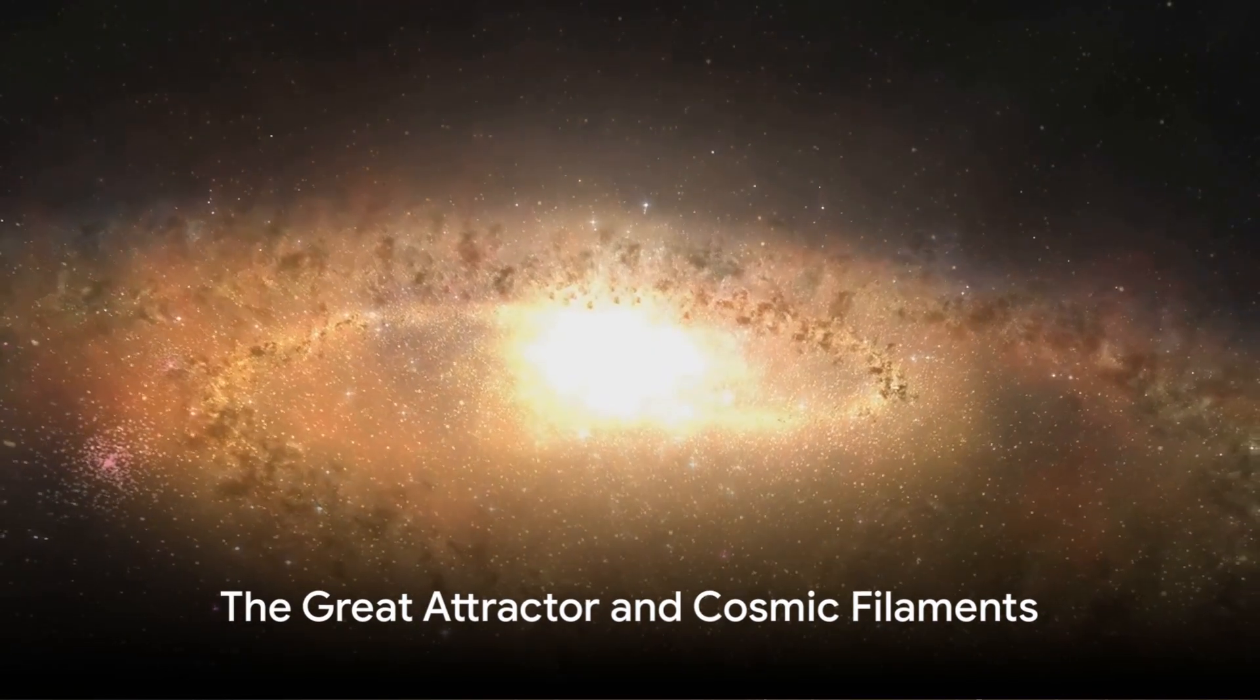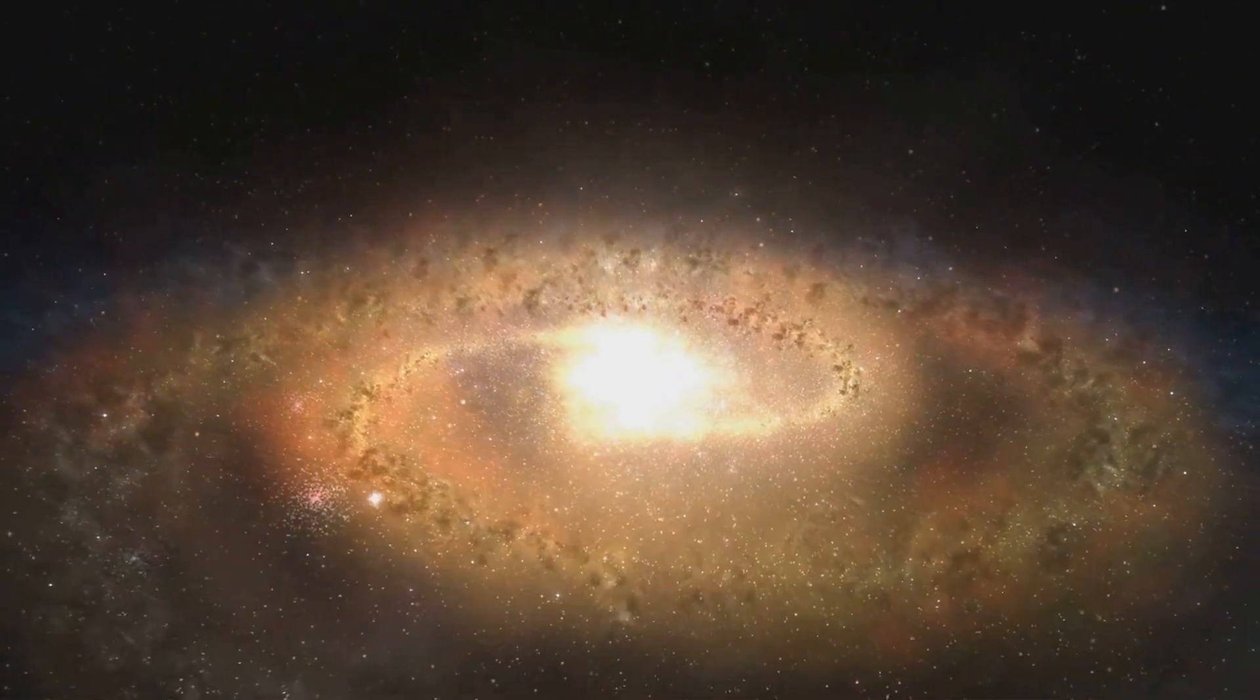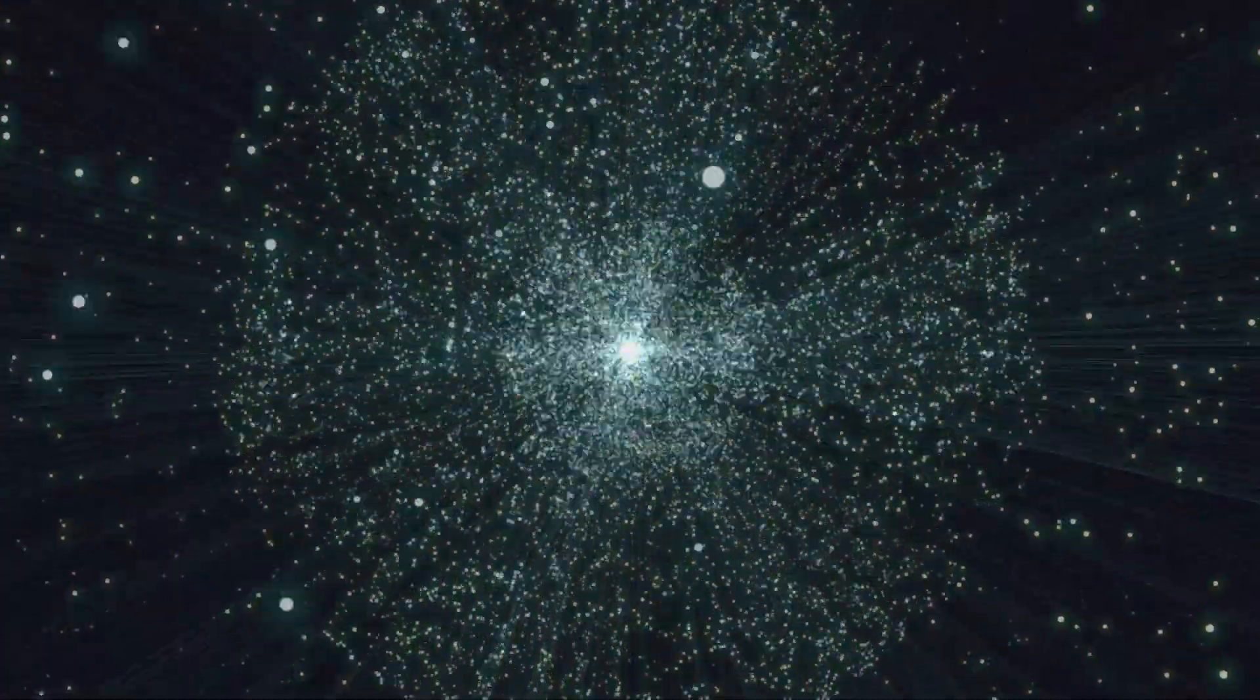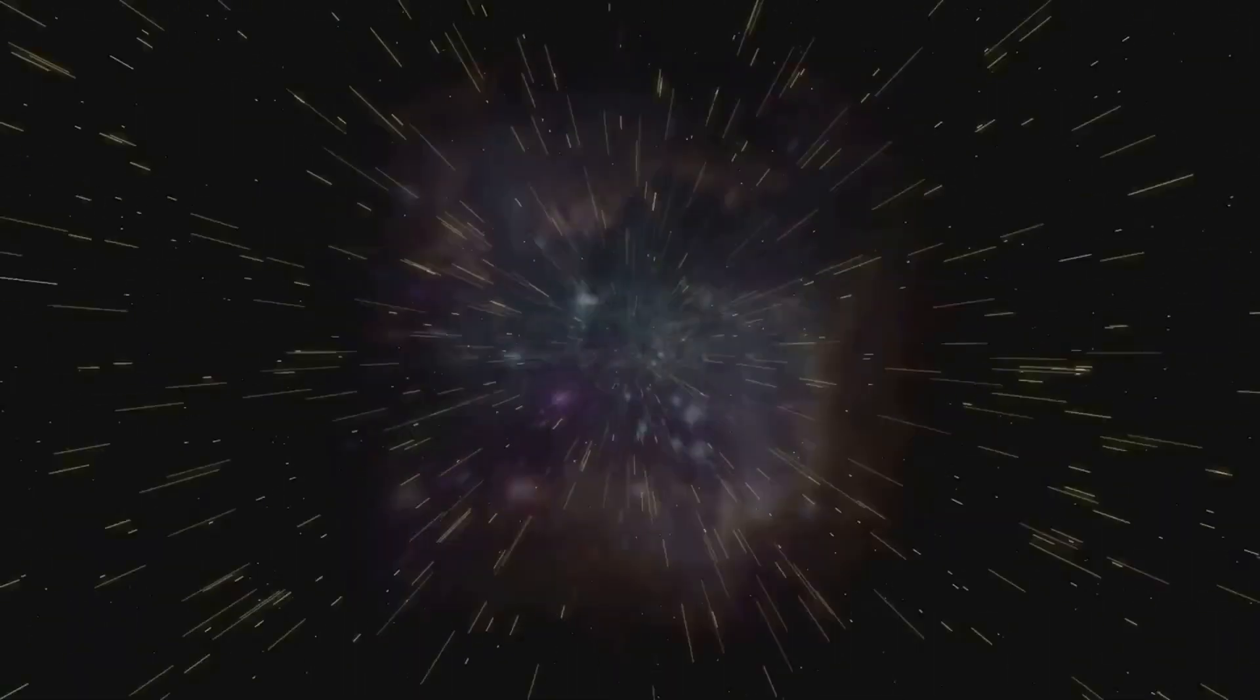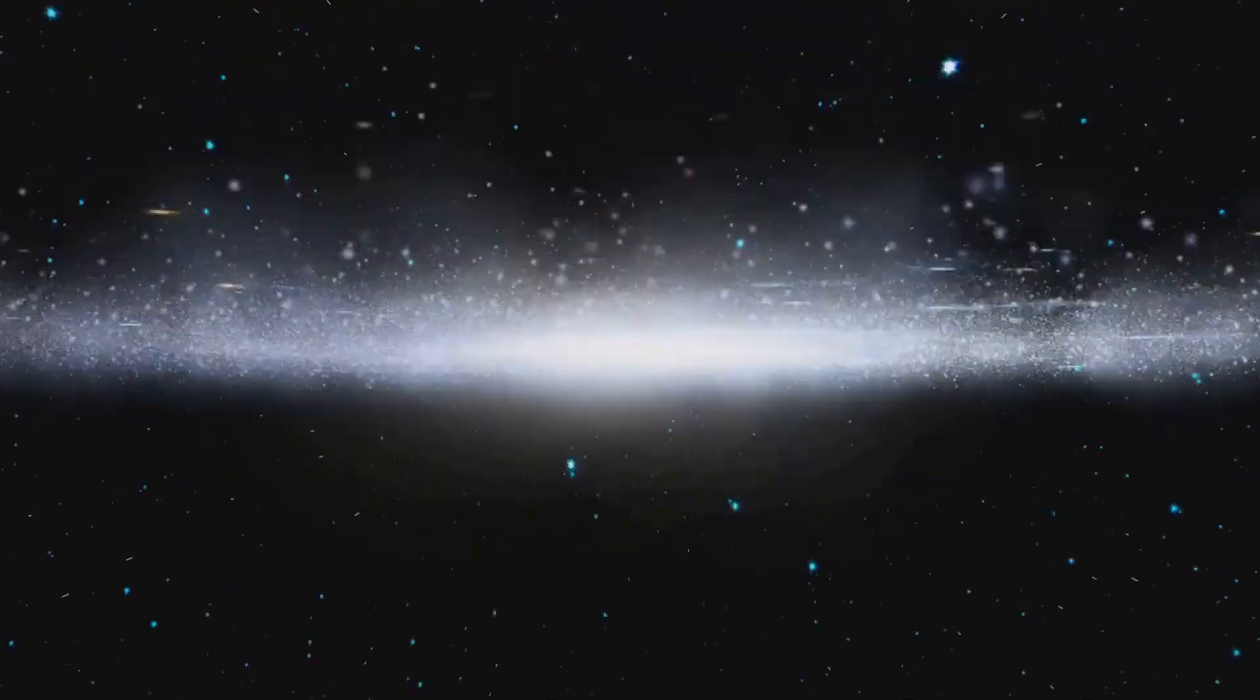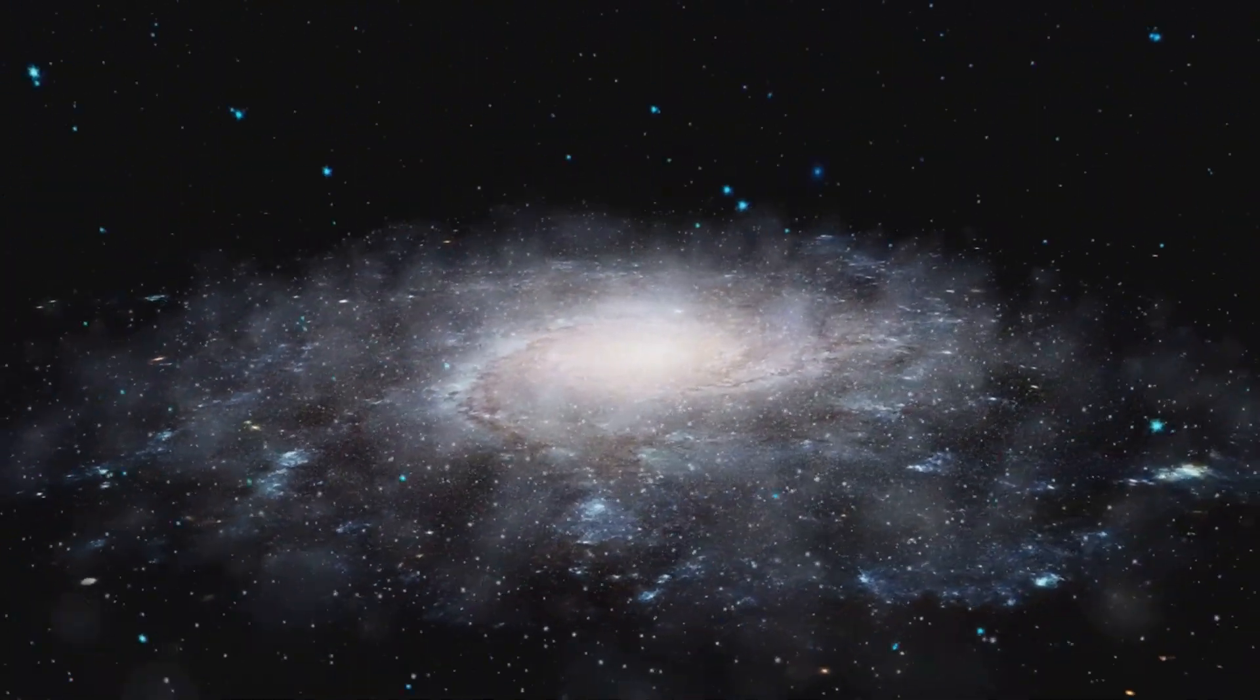Ever felt an irresistible pull towards something? The universe knows that feeling too. It's like an invisible cosmic tug of war, and at the center of it all is the Great Attractor. This gravitational anomaly, located about 220 million light-years away, is pulling galaxies, including our very own Milky Way, towards it at an astonishing speed of 600 kilometers per second.